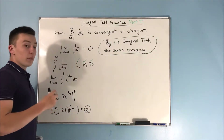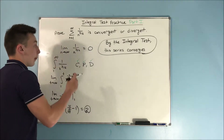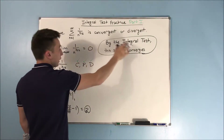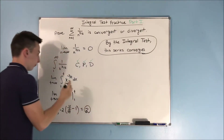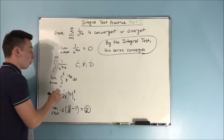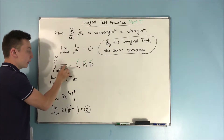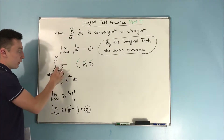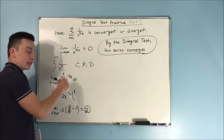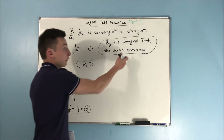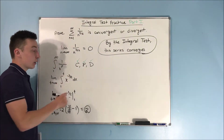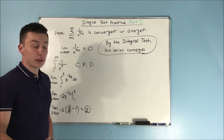So yes, we saw it as a p-series, but now you can also see the roots of it from the integral test itself. The whole idea of a p-series comes from the fact that if you replace the three halves with a general p, you can plug in any power. If p is greater than one, it's going to converge by the integral test. And if p is less than or equal to one, it's going to diverge by the integral test.